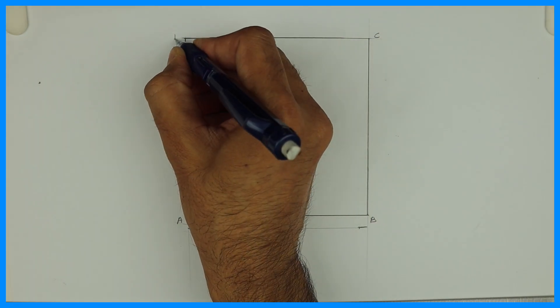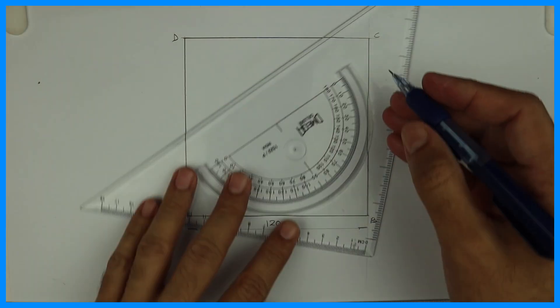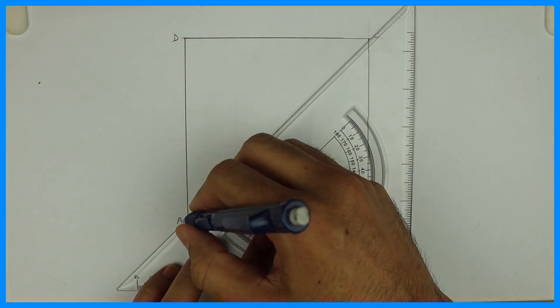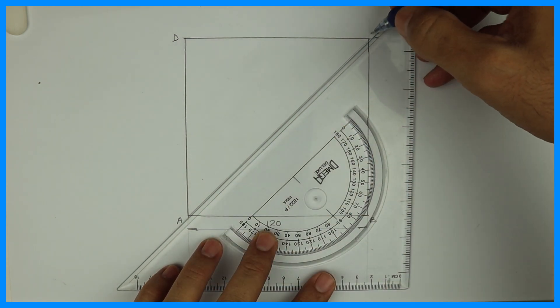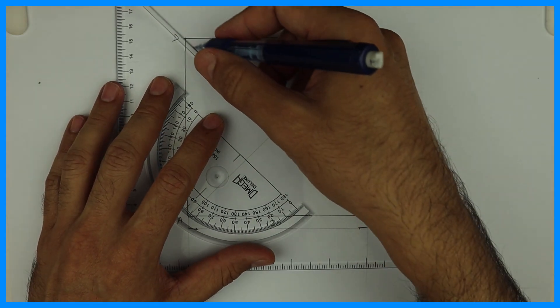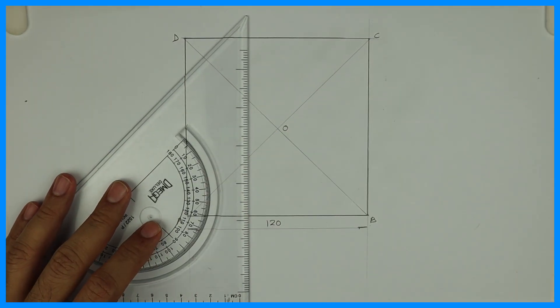So we got A, B, C, D square. After that you join diagonal. Join A to C and B to D. This is O.